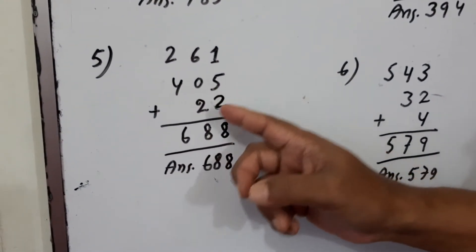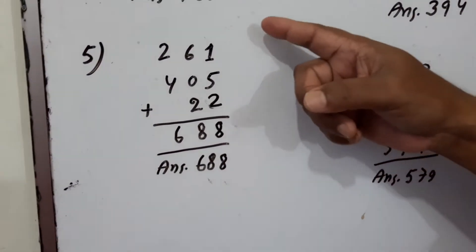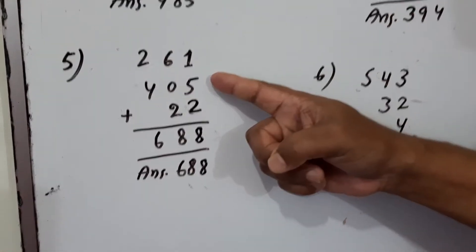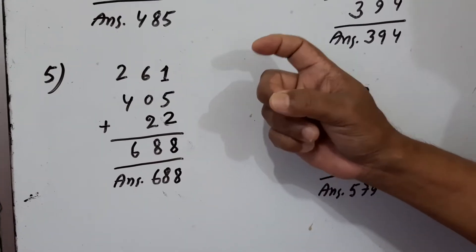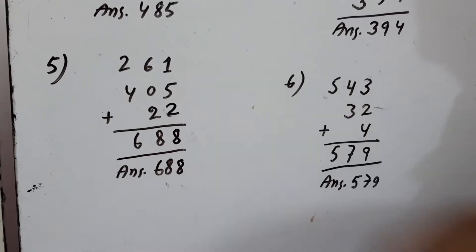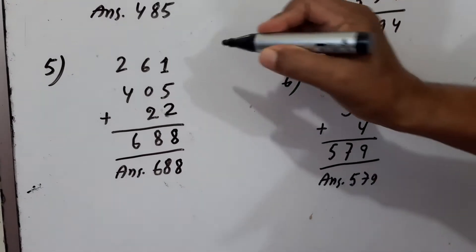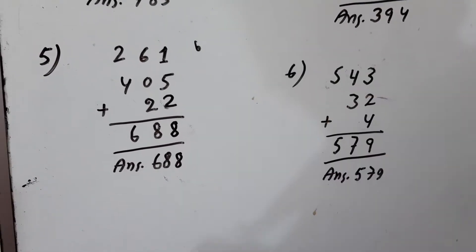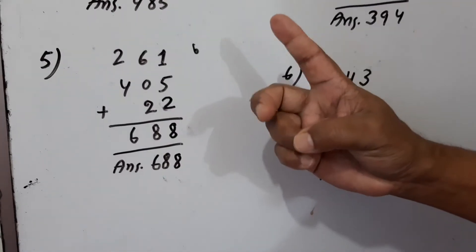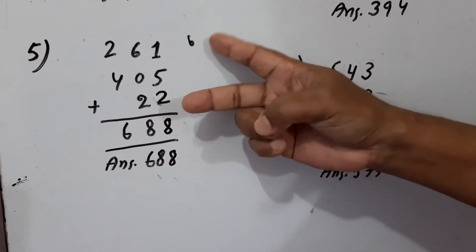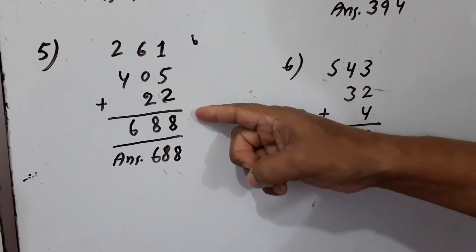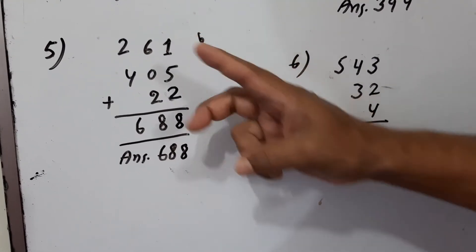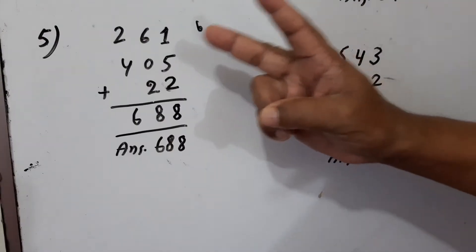261 plus 405 plus 22. First, this is 5 and this is 1. Take 1 in hand: 5, 5, 6. Now 6, we can write here 6. And this is 2, take 2 in hand. This is 6, 7, 8. This 8. Now this is 6 plus 0 is 6, and take 2 in hand: 6, 7, 8.